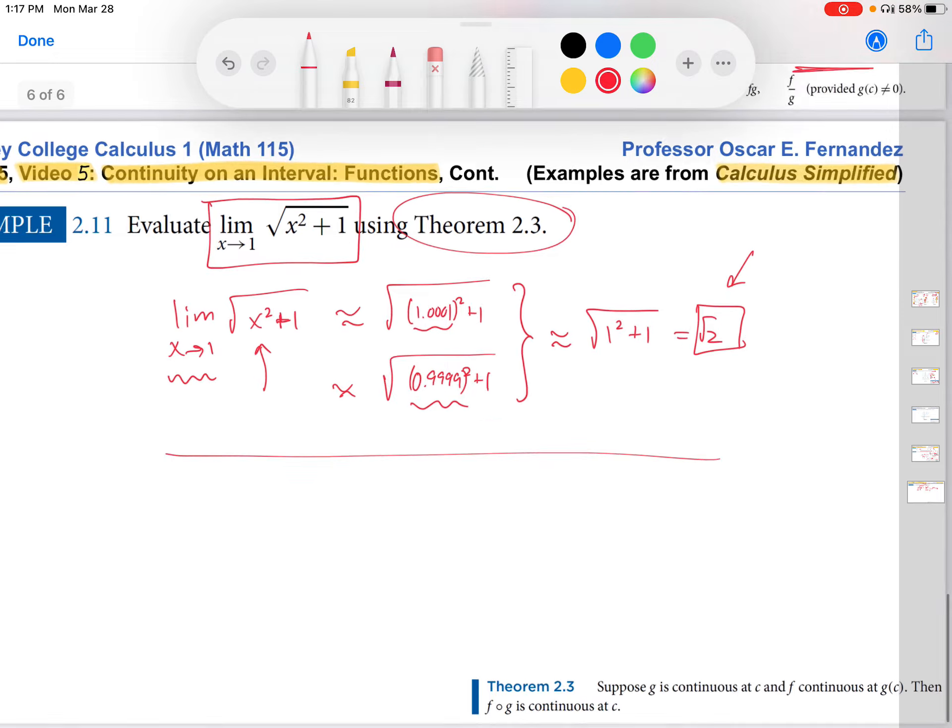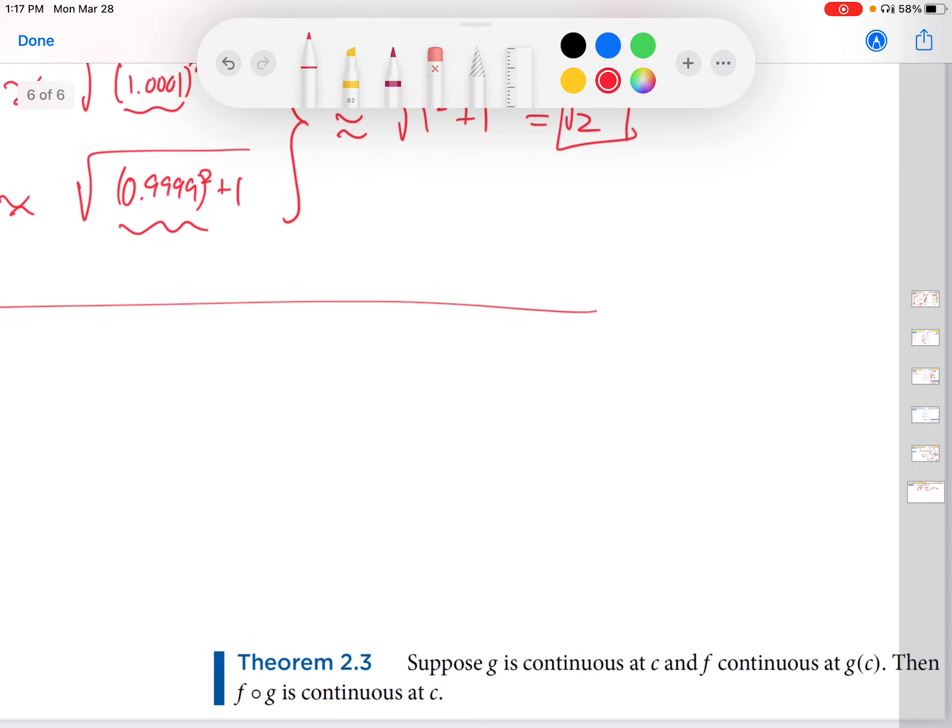So let's review the theorem first. So down here, the theorem says, suppose g is continuous at c and f is continuous at g of c. Then f of g is continuous at c. This is the composition. So this is a theorem that tells us about the continuity of composite functions. So it says f of g of x is continuous at x equals c when all of these hypotheses are satisfied. So there's a lot of stuff to check here. So first of all, if I'm going to apply this theorem to this example, I need to view the function as a composition.